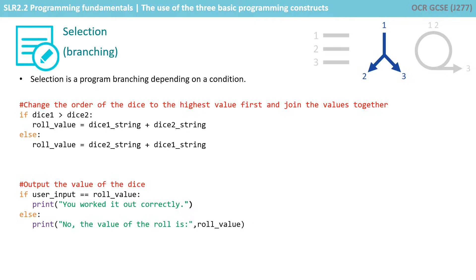The first typical selection construct you learn about is the if statement. Here we can see if Dice1 is greater than Dice2, then we execute the first line of code. Otherwise, or we say else, execute this line of code. This is quite typical and something by now you'll probably be quite used to.